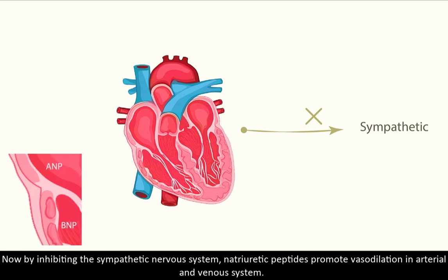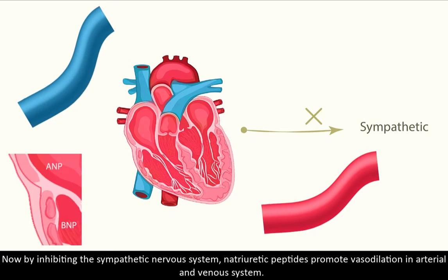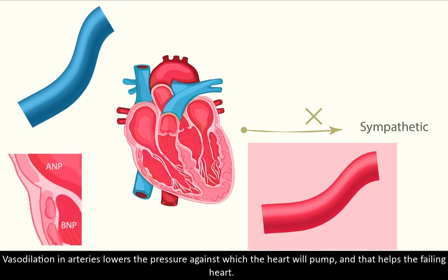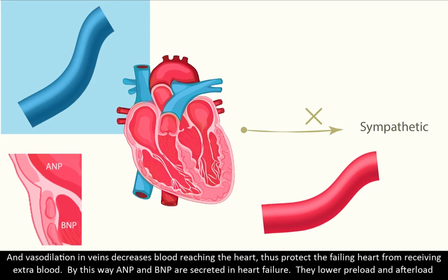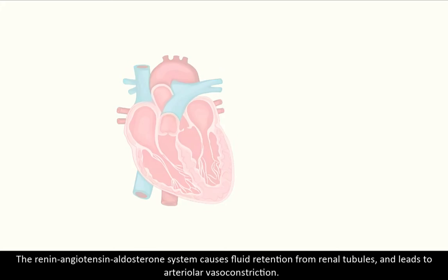By inhibiting the sympathetic nervous system, natriuretic peptides promote vasodilation in both the arterial and venous system. Vasodilation in arteries lowers the pressure against which the heart will pump, which helps the failing heart. Vasodilation in veins decreases blood reaching the heart, thus protecting the failing heart from receiving extra blood. By this way, ANP and BNP are secreted in heart failure and they lower both preload and afterload.